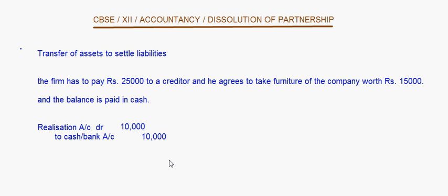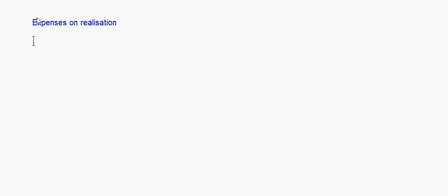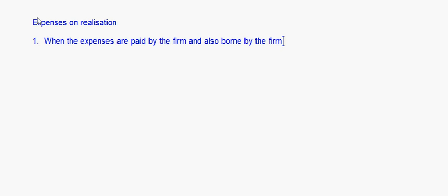The next important thing in realization account is the realization expenses — expenses on realization. There are various cases and journal entries pertaining to this. It's a very important topic in realization, so you should carefully read what is given in the question and put the correct entry. The first and simplest case is when the expenses are paid by the firm and also borne by the firm. The entry is: Realization Account debit, to Cash or Bank Account.